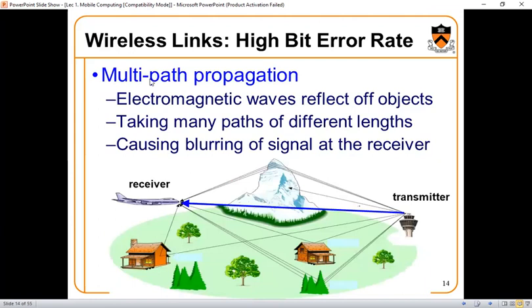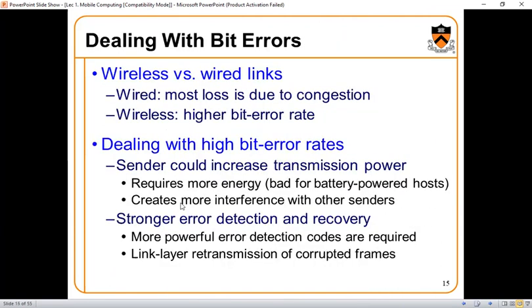Another important issue is multi-path propagation. You may receive signals from multiple directions, and these signals after reflection can create problems when they reach the destination node. Electromagnetic waves reflect off objects and take many paths of different lengths, causing blurring of the signal at the receiver. This multi-path propagation can increase the bit error rate, and sometimes there is the possibility of collision at the receiving antenna.